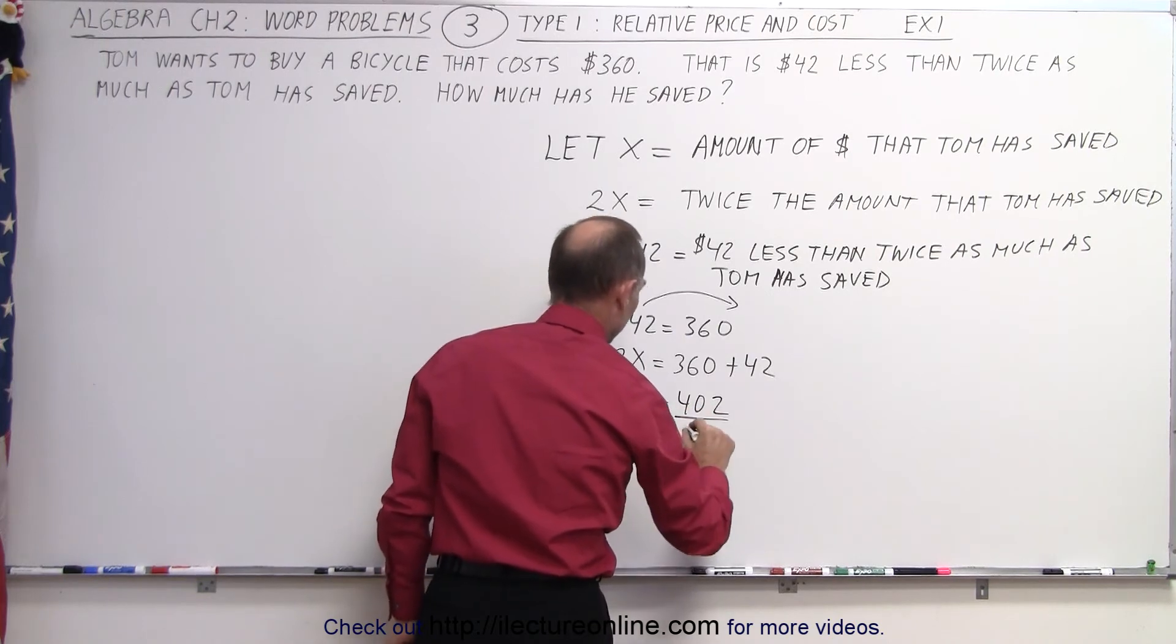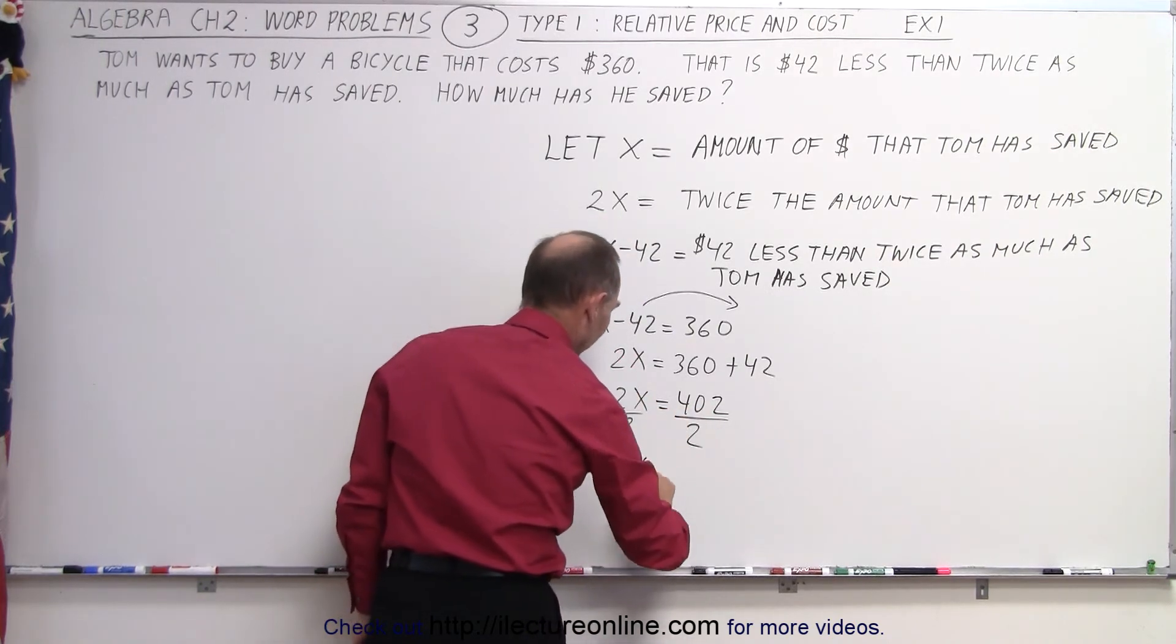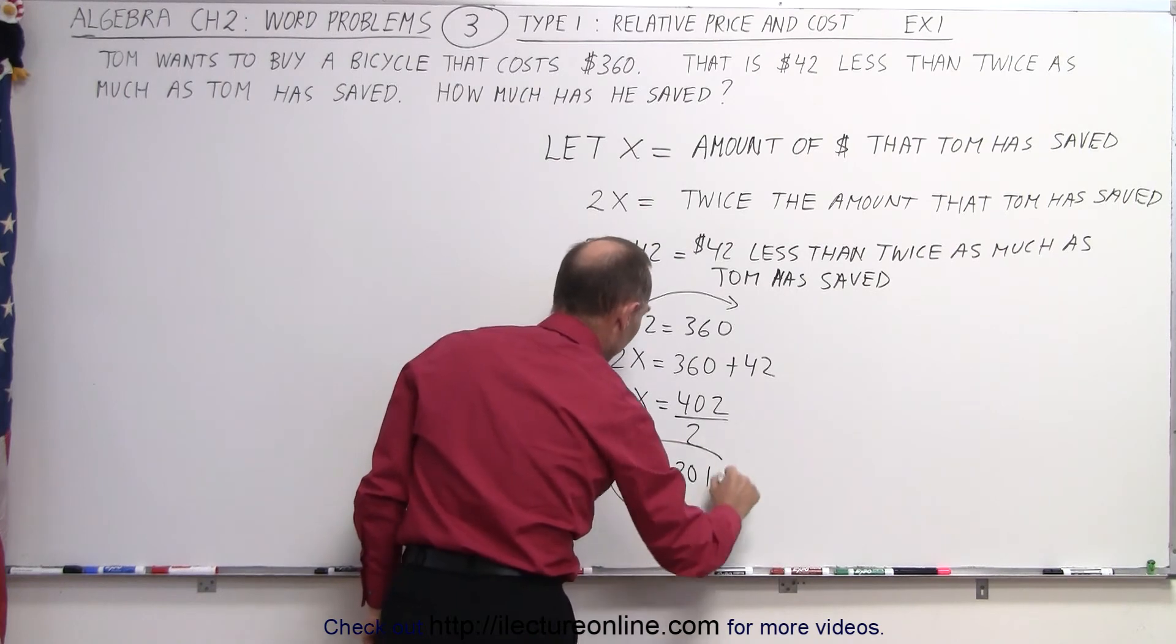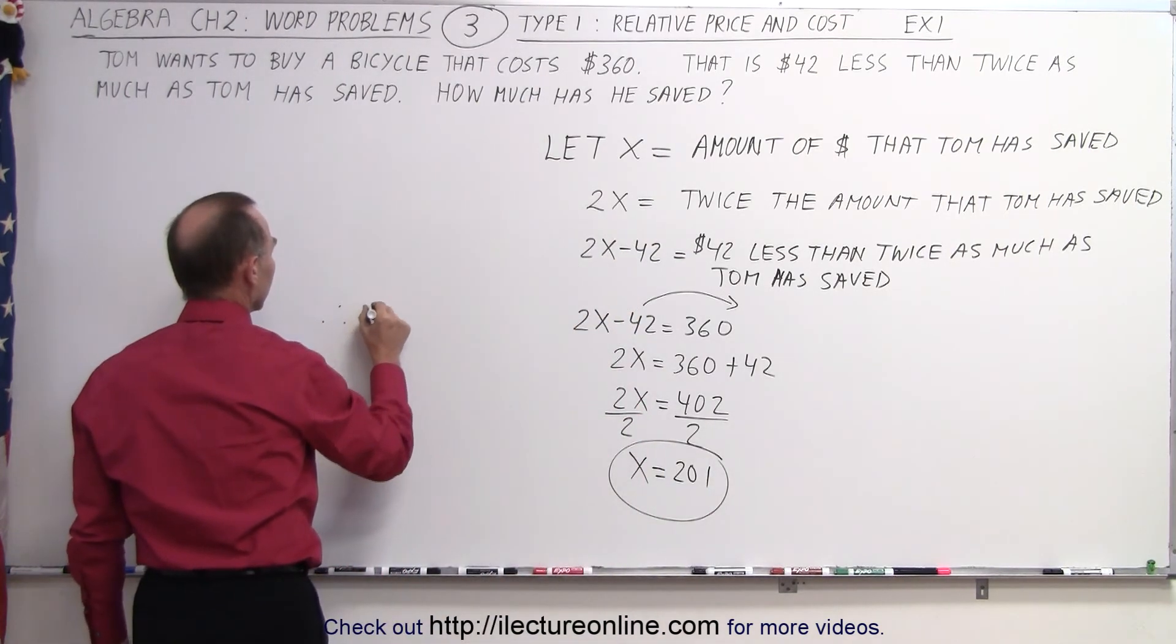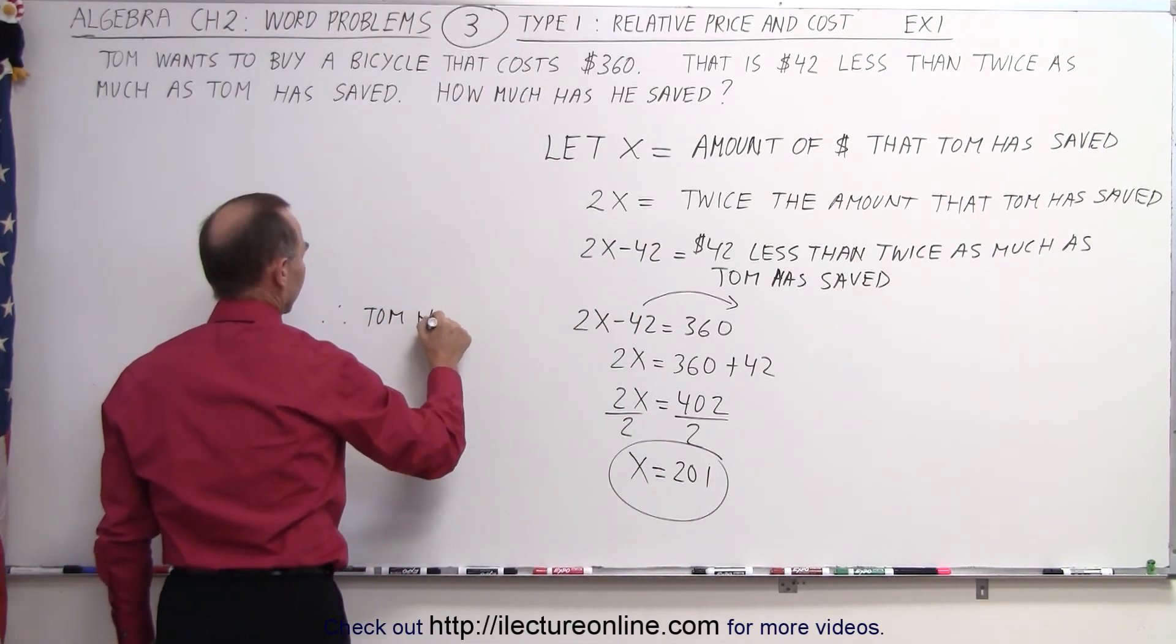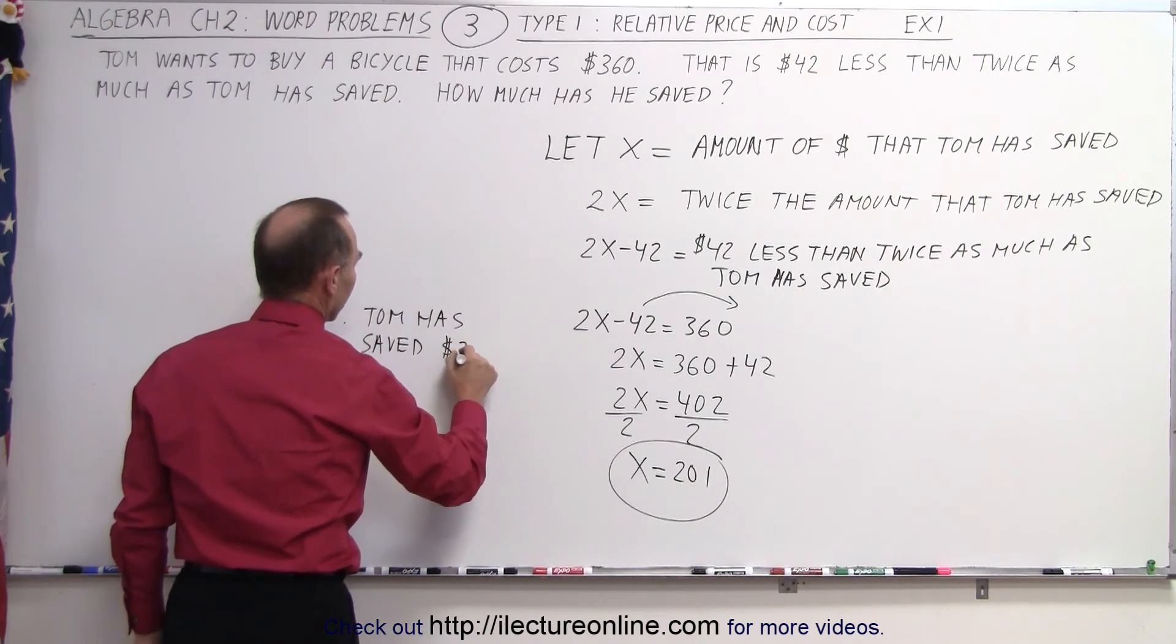Now, we divide both sides by the numerical coefficient of X. So, X is equal to 201, which means, therefore, Tom has saved $201.